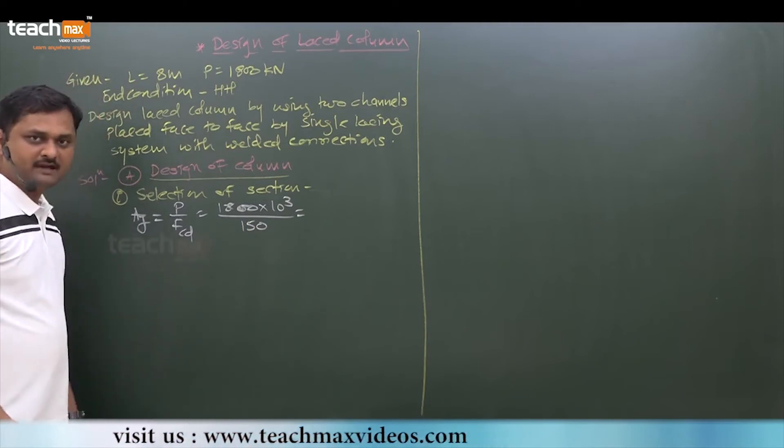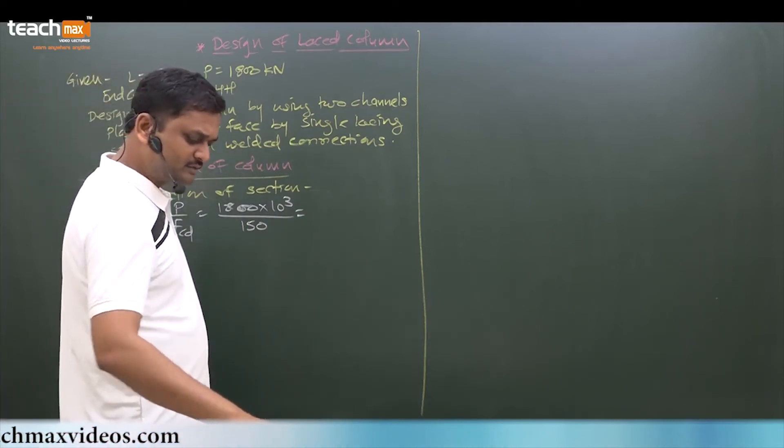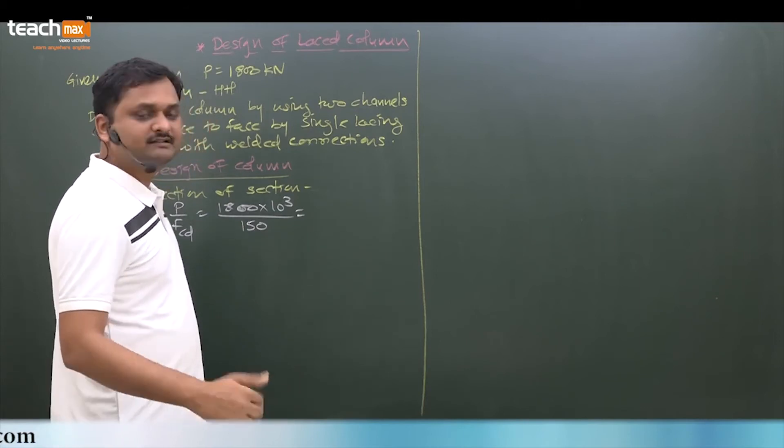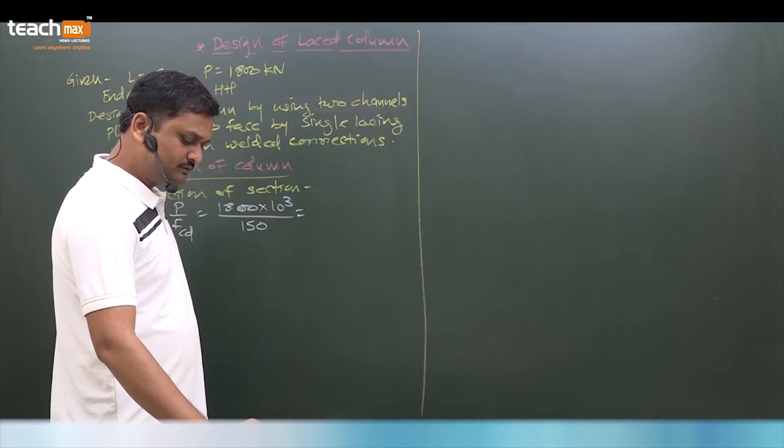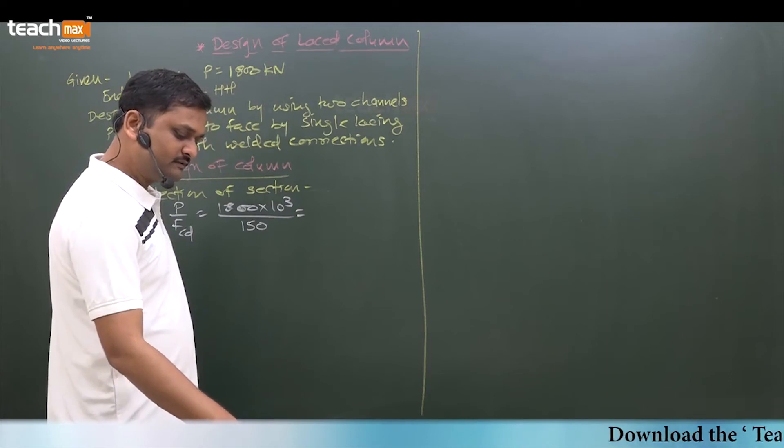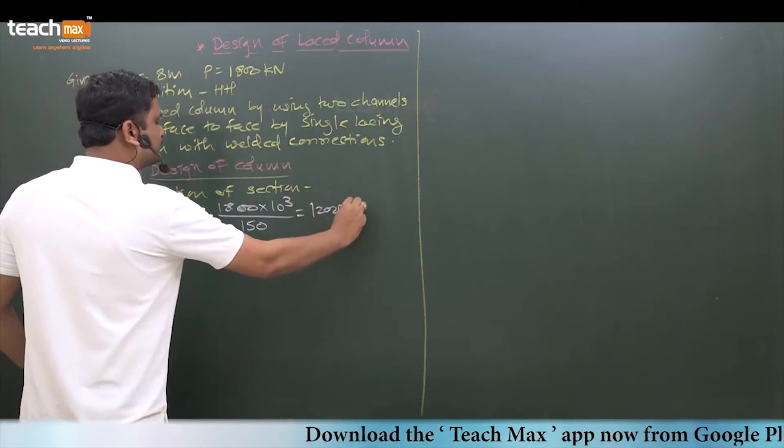1800 into 1000 divided by 150, so area required 12,000. So required area is 12,000 mm² means 120 cm².